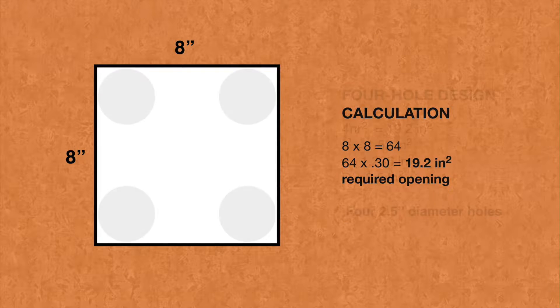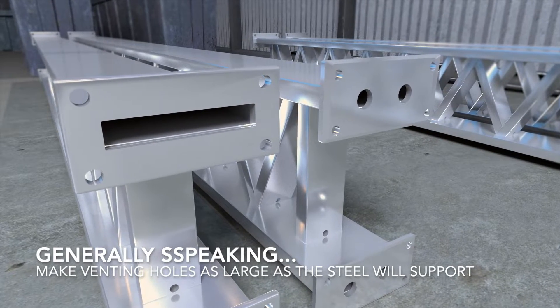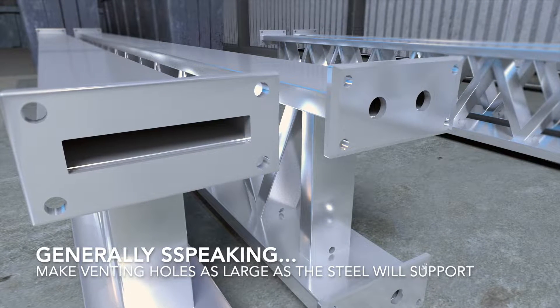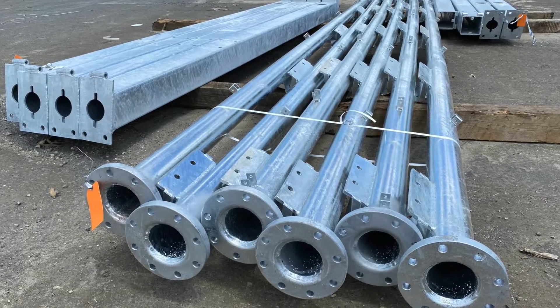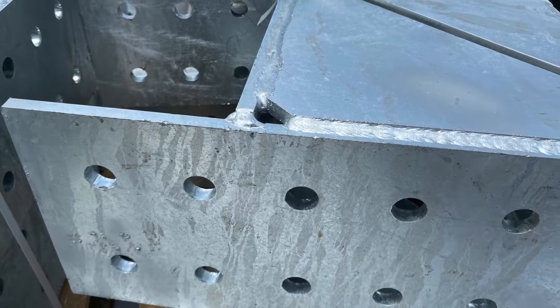The size and location of venting holes must be carefully considered. Generally speaking, the size of venting holes should be as large as the steel can support without impacting the integrity of the fabrication. This will help avoid any safety concerns and maximize the final product quality.